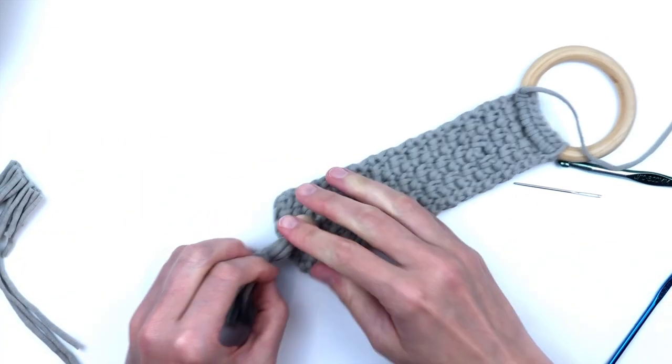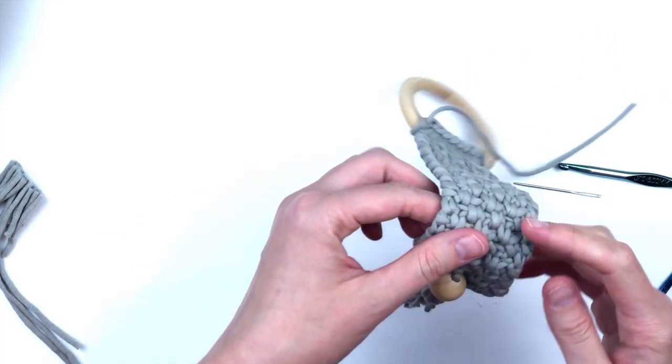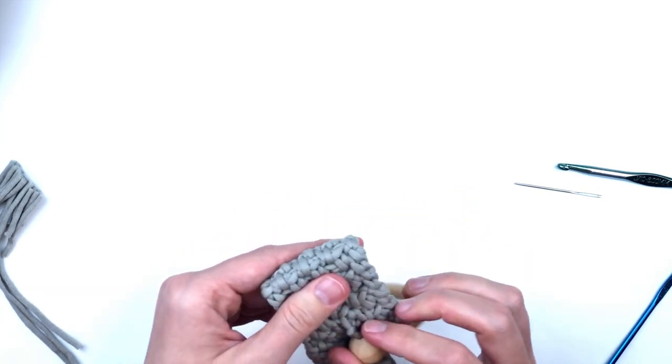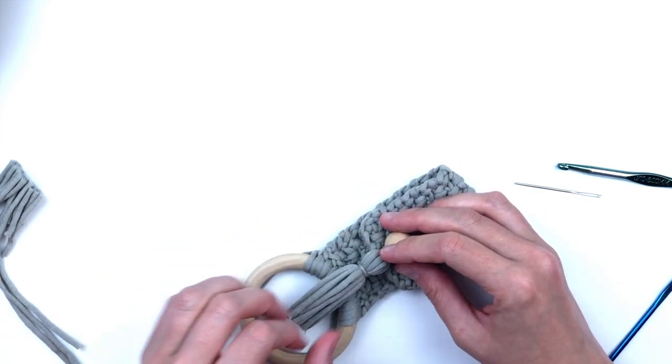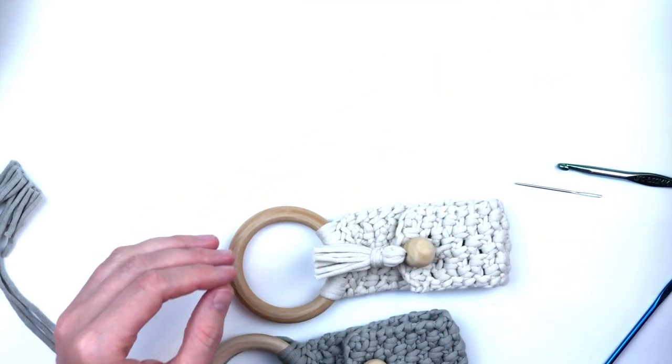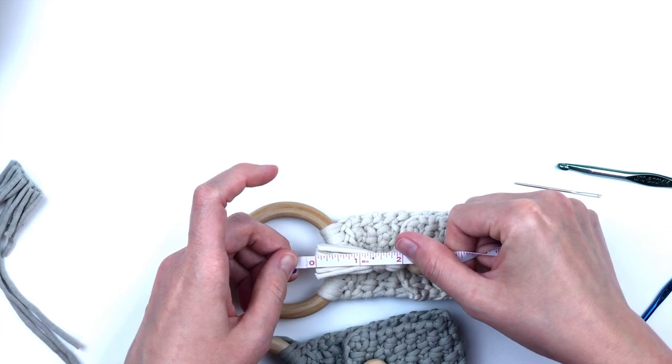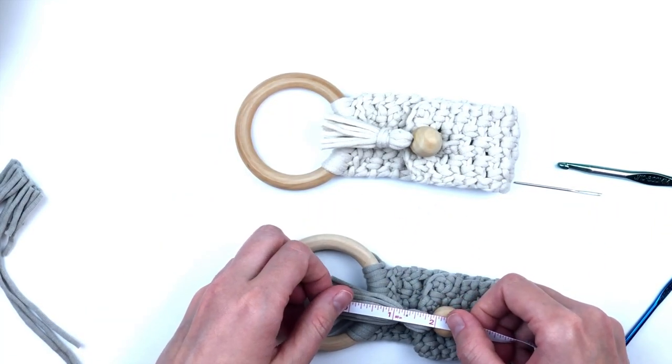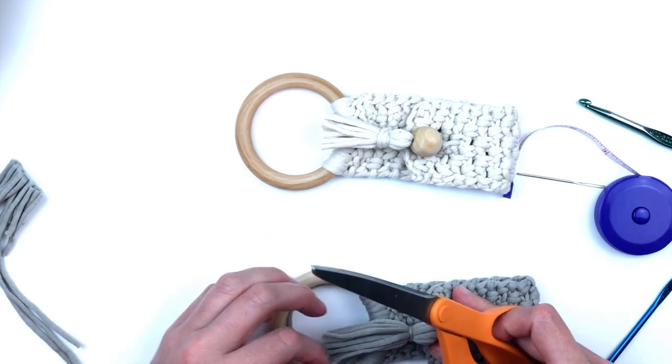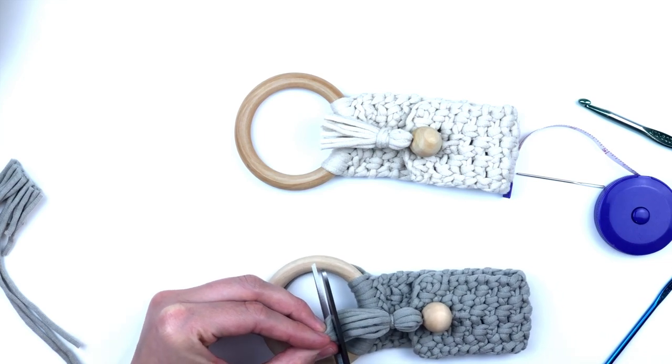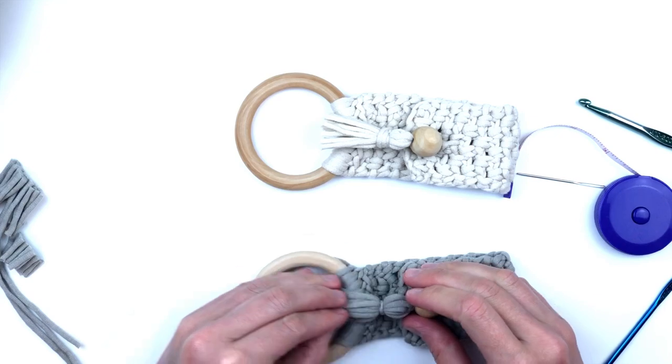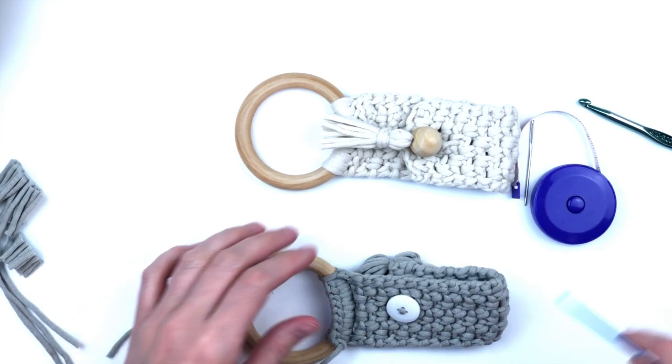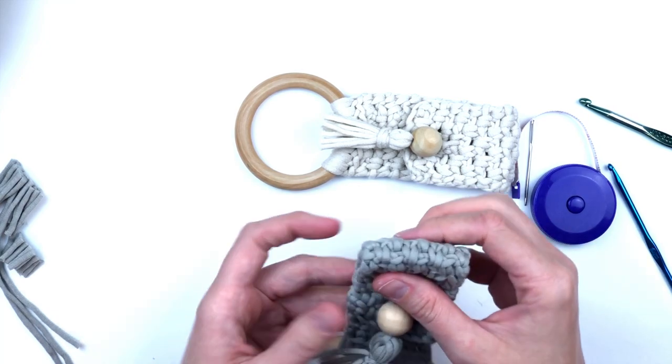Now at this point, normally what I would do is take it to an iron and iron it. The steam from the iron would help relax these threads. But since I'm in the middle of a tutorial, I'm not going to take it to the ironing board. I feel like the tassel ends are still a little too long yet. I don't want it to hang down. So I'm going to look at the other one and measure it. It appears to be about two inches from the bottom of the bead to the bottom of the tassel. So I'm going to make mine a little bit shorter. Mine measures a little bit too long. Now you would take your ends and weave them in with that smaller hook. And like I said, I would iron that tassel down.